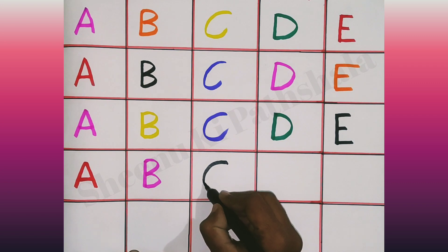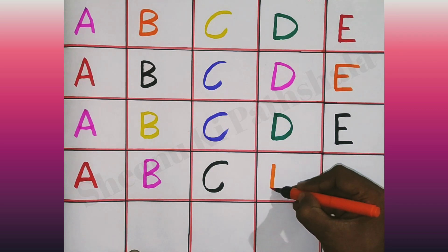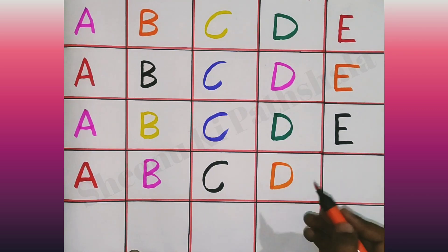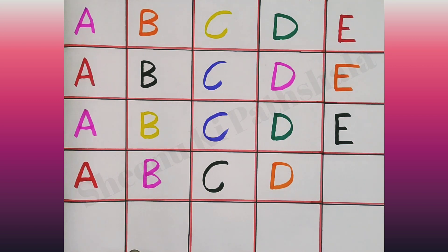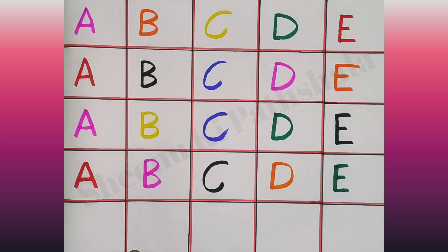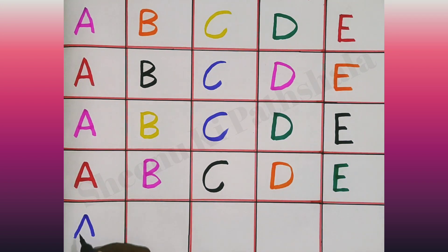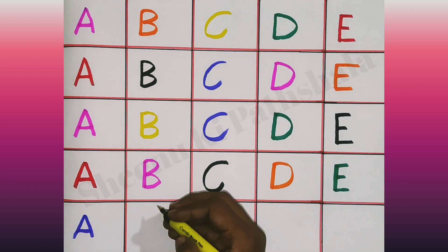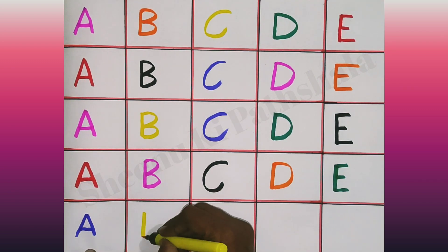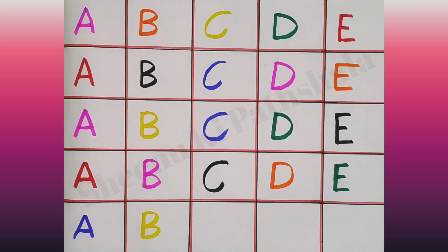C. C for cat. D. D for dog. E. E for elephant. A. A for apple. B. B for ball. B for ball.